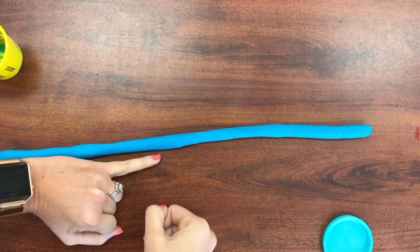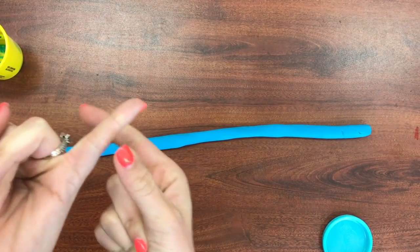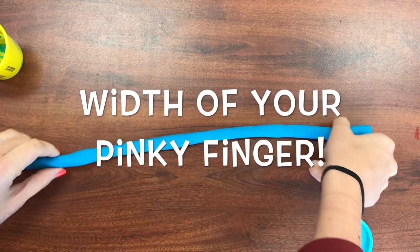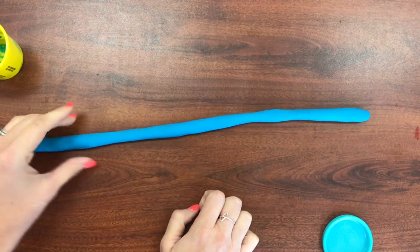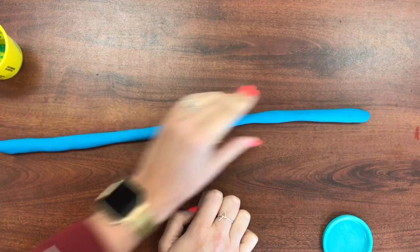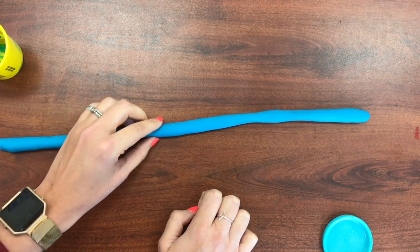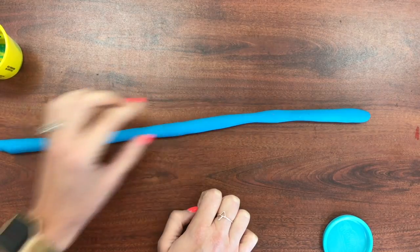I have it to about the size of my pinky. You want your coil to be about the width of your pinky. And notice all of it is about the same width. It gets a little thinner in a few places, but for the most part, it's about the same width in every area of my coil.